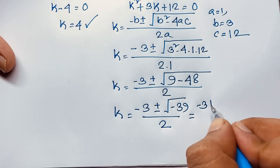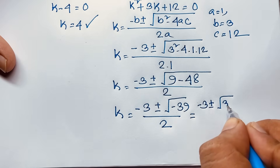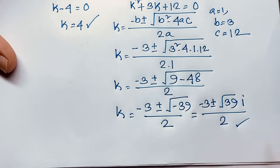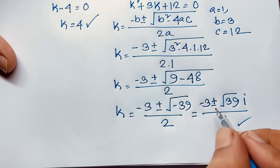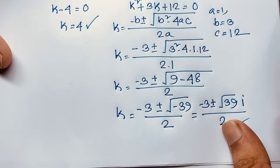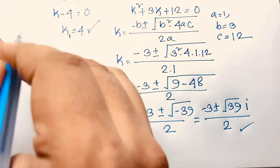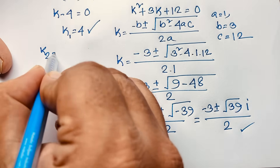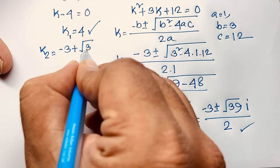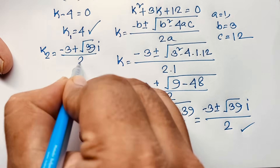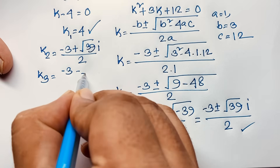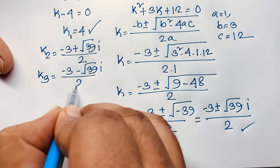This simplifies to k equals negative 3 plus or minus square root of negative 39 over 2. Applying complex number rules, where square root of negative 1 is i, we get k equals negative 3 plus or minus square root of 39 times i, over 2. So k2 equals negative 3 plus root 39 i over 2, and k3 equals negative 3 minus root 39 i over 2.